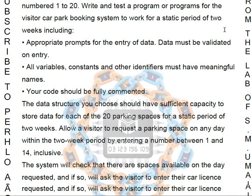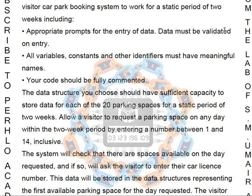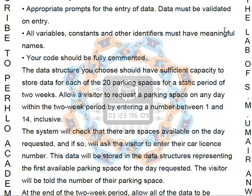All data must be validated on entry. All variables, constants and other identifiers must be meaningful. Your code should be fully commented. The data structure you choose should be sufficient to store data for each of the 20 parking spaces for a static period of 2 weeks. Allow a visitor to request a parking space on any day within the 2-week period by entering a number between 1 and 14 inclusive.